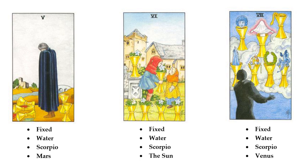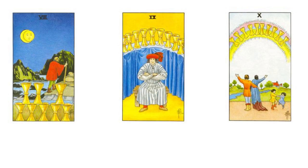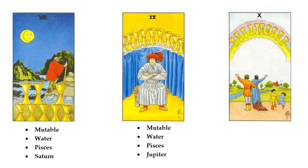The eight, nine, and ten of cups are all mutable water Pisces — creative, full of empathy, and generous of spirit, but potentially impressionable, closed off, and overly emotional. The Eight of Cups is mutable water Pisces in Saturn, restricting the generosity and empathy of Pisces, and restricting the mutable quality — making the energy rigid and unforgiving. The Nine of Cups is mutable water Pisces in Jupiter, expanding all that is Pisces with a focus on the self, since this is a nine. The Ten of Cups is mutable water Pisces in Venus — the planet of love — and no wonder, since the Ten of Cups is our card of bliss and love, our beautiful happily-ever-after card.